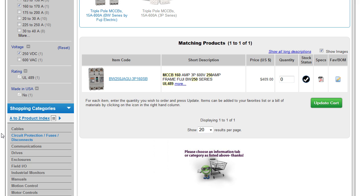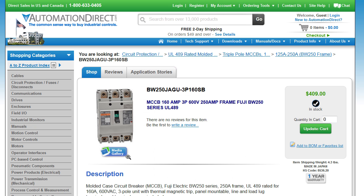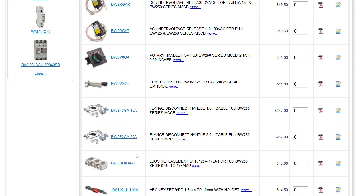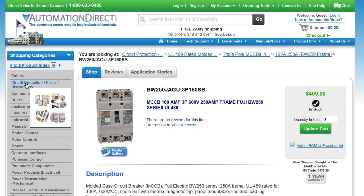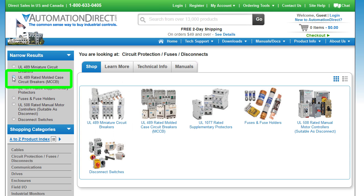For accessories, I can click on that part number and scroll down to the bottom and there's a bunch of suggested accessories that could go with that breaker. The other way to do it is to come back over here, select MCCB, and this time choose accessories.